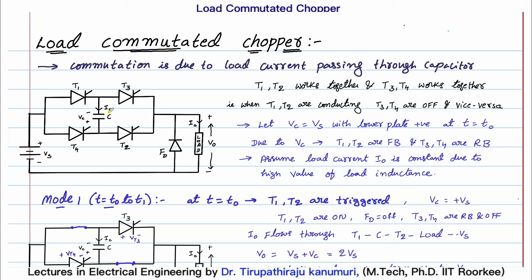Here, unlike the previously discussed circuit, a total of 4 thyristors are used. At any time, 2 thyristors will be on and 2 thyristors will be off. For example, thyristors T1 and T2 will be on while T3 and T4 will be turned off, connecting the supply to the load through those thyristors. When T3 and T4 are on, T1 and T2 will be off, and vice versa.